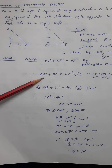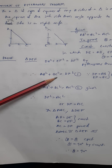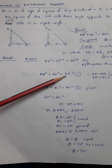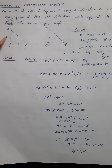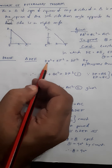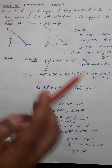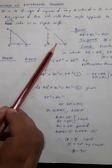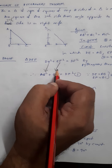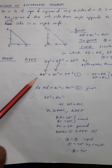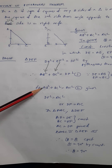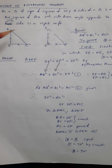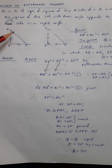Now, AB² + BC² = DF². We can say this because DE is equivalent to AB and EF is equivalent to BC by construction. So replacing DE with AB and EF with BC gives us AB² + BC² = DF². But it is already given that AB² + BC² = AC².